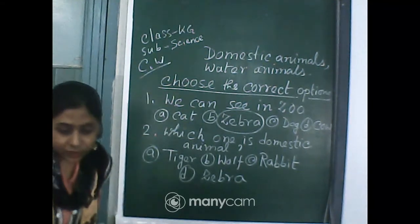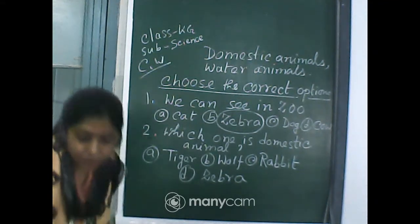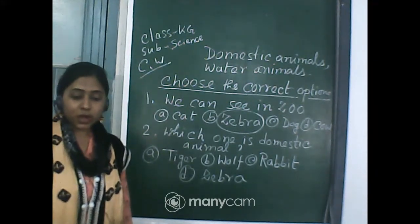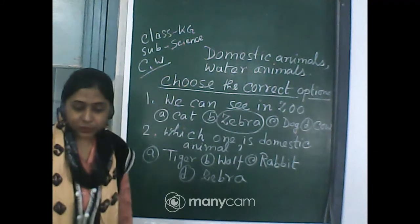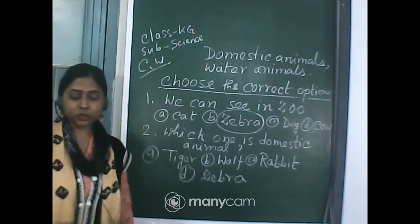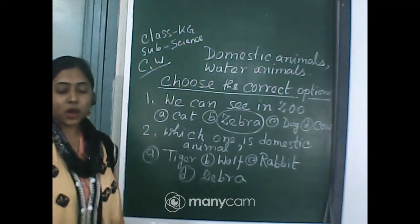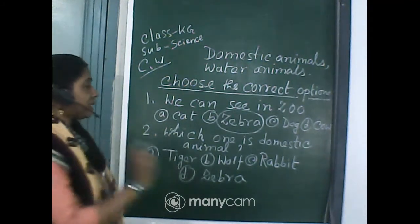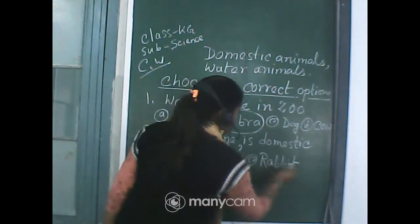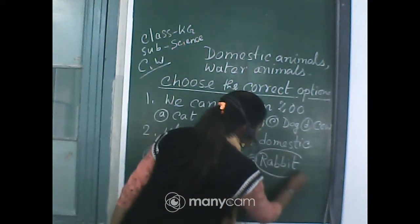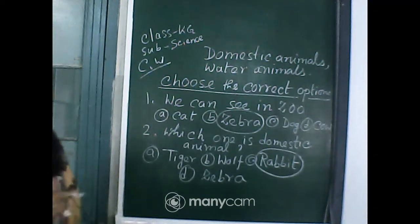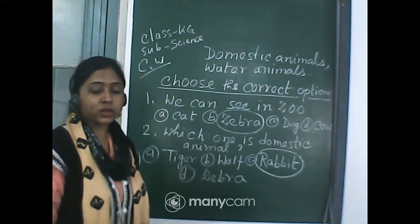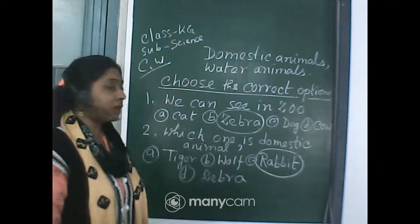Tathagato was the first to answer, then Ashmita, Shohaddo, Shoshmit, and Prithviraj — all have given correct answers. The correct answer is C: Rabbit. Rabbit is a domestic animal because we can see rabbits around our homes.